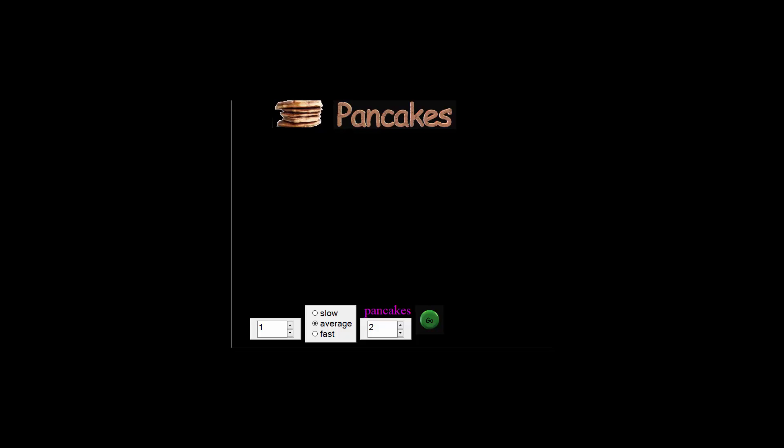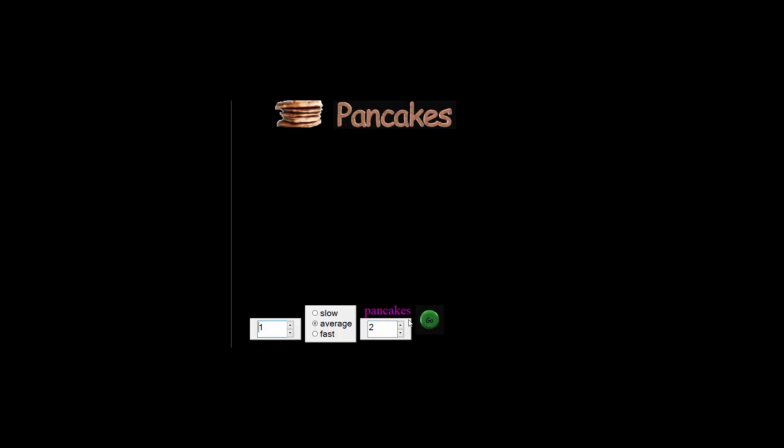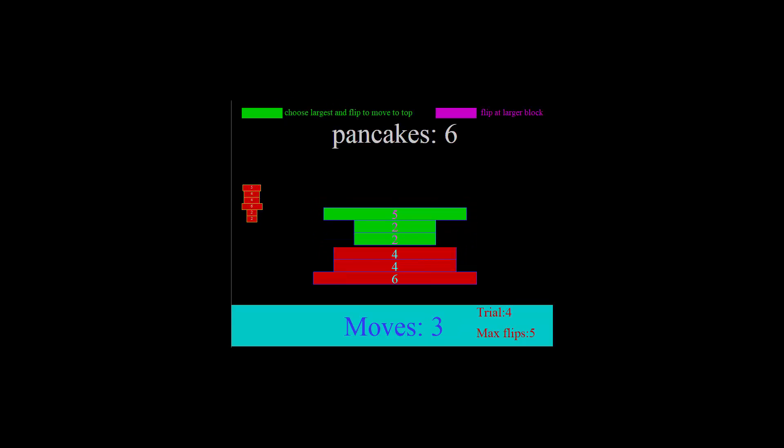Let's run a simulation using six pancakes and five trials and remember what we're expecting two times six minus three which is nine maximum flips and after five trials we've got a maximum number of flips of seven. Let's increase the number of trials and we'll see if we get nine for the maximum number of trials.